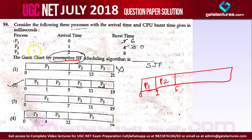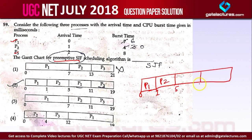P3 has a burst time of 8. At time 5, we have only two processes in the ready queue — P1 and P3 — because P2 is already completed. Between P1 and P3, P1 is the shortest process, so P1 will run from 5 to 11. Then we have only one process left, P3, which will run from 11 to 19.